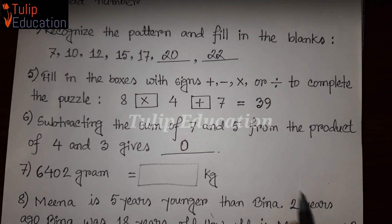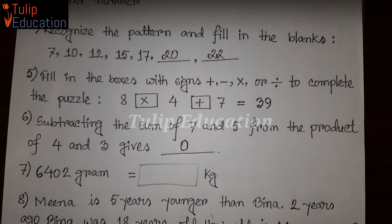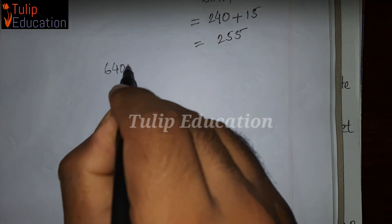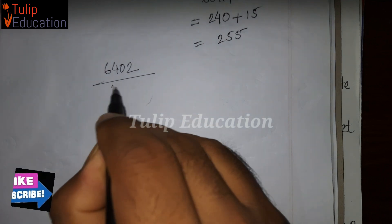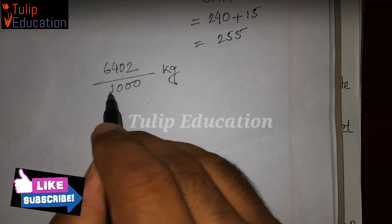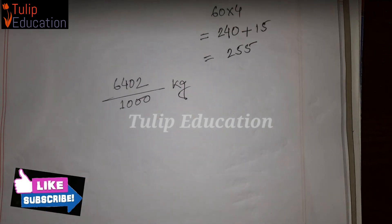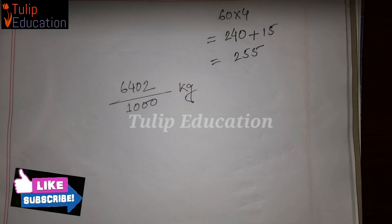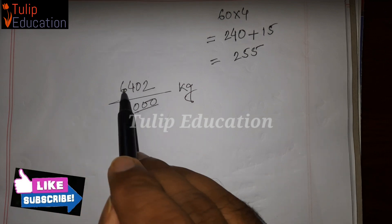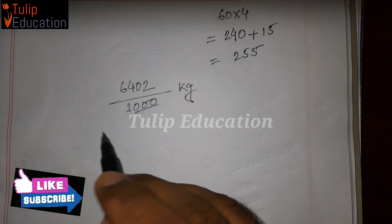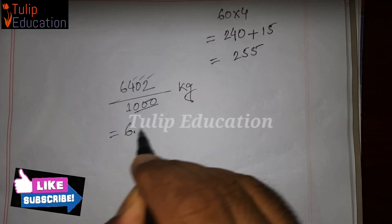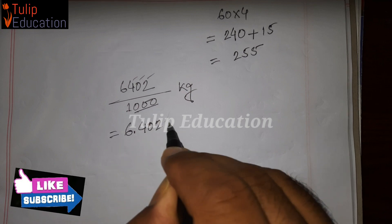How do we divide? We have 6,402. We divide by 1,000. The gram equals 1,000 grams per kilogram. So dividing 6,402 grams by 1,000 gives us the result in kilograms — that is 6.402 kg.